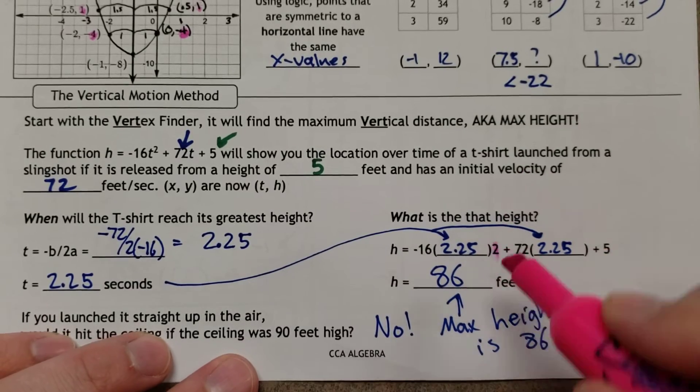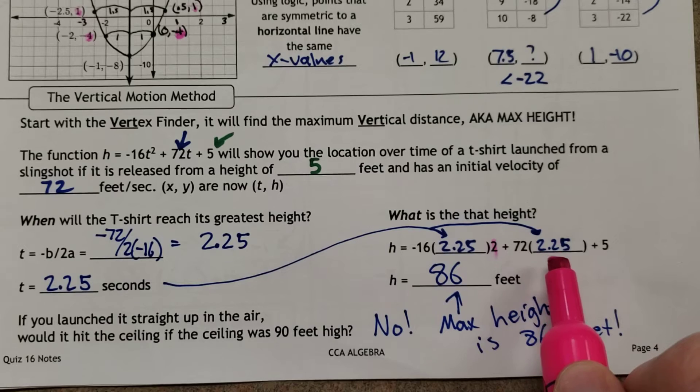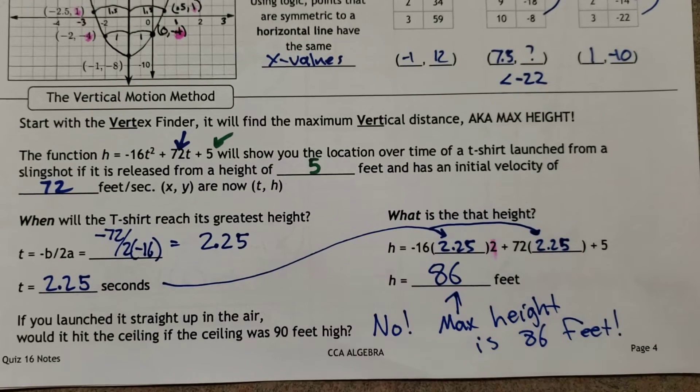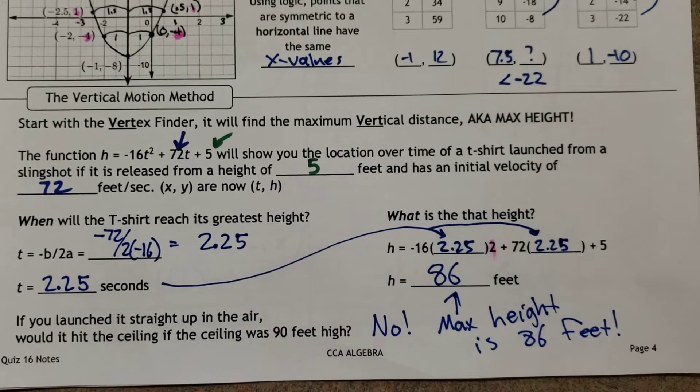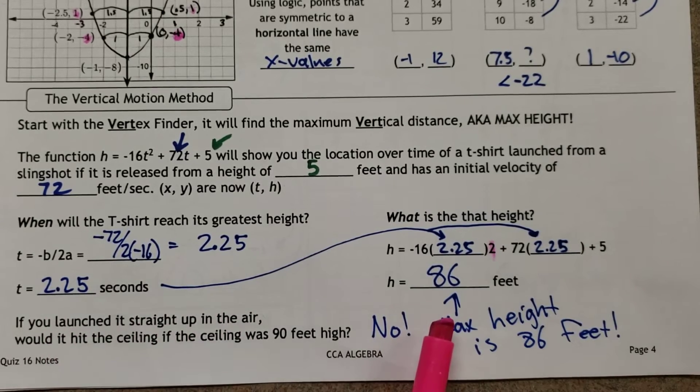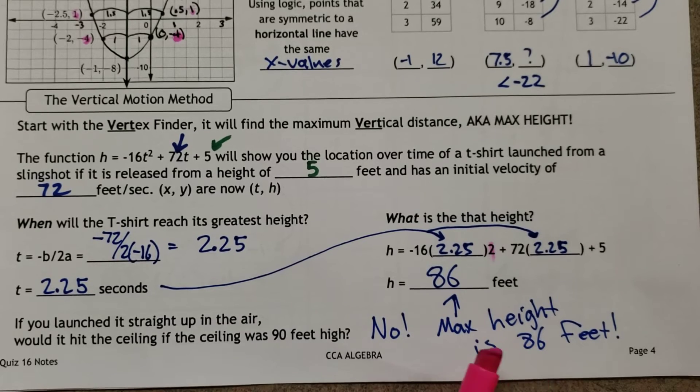Plus 72 times 2.25 plus 5 turns into 86 feet. So how can we break that down? Well, at 2.25 seconds, this t-shirt will have reached its maximum height, which is 86 feet.